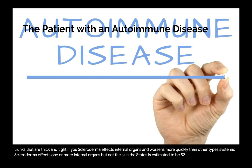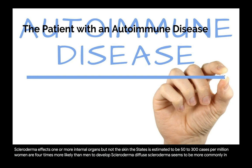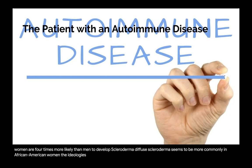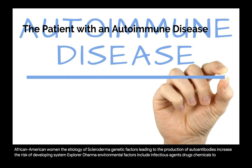The prevalence of scleroderma in the United States is estimated at 50 to 300 cases per million. Women are four times more likely than men to develop scleroderma; diffuse scleroderma is more common in African American women. Genetic factors leading to autoantibody production increase the risk. Environmental factors include infectious agents, drugs, chemicals, silica dust, and solvents.